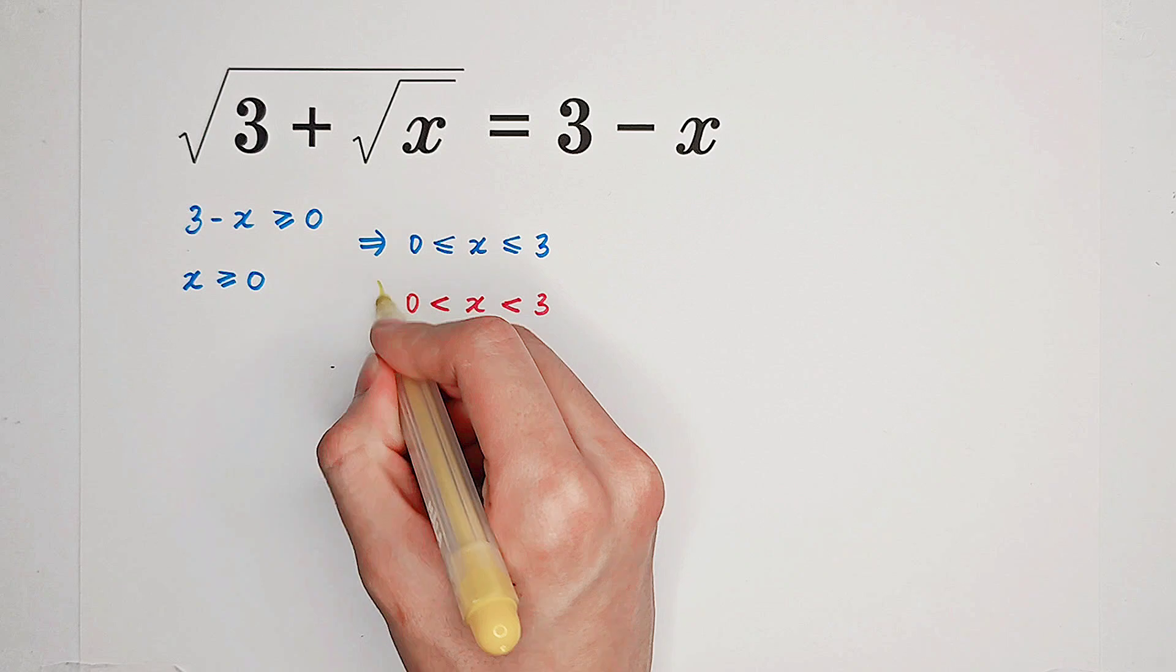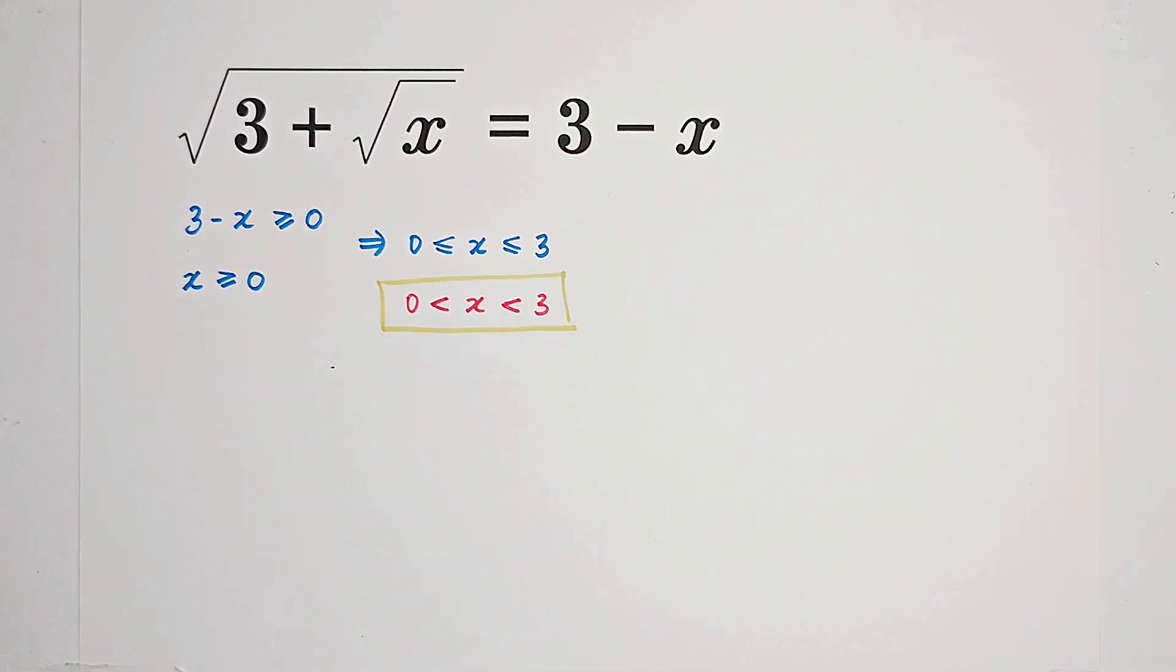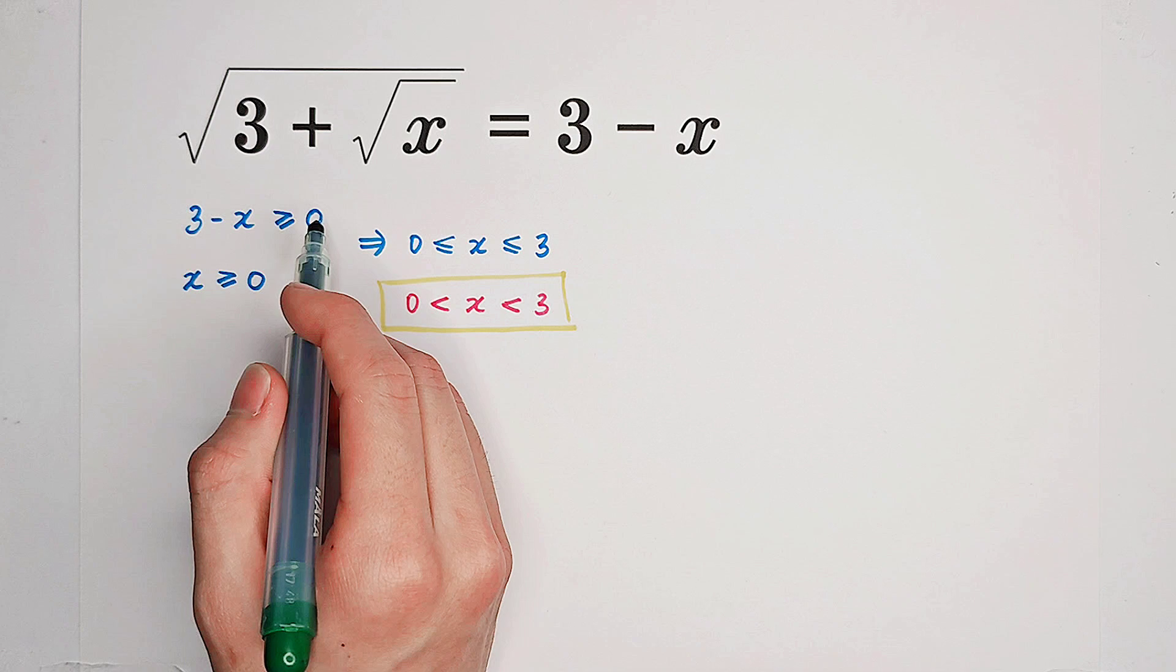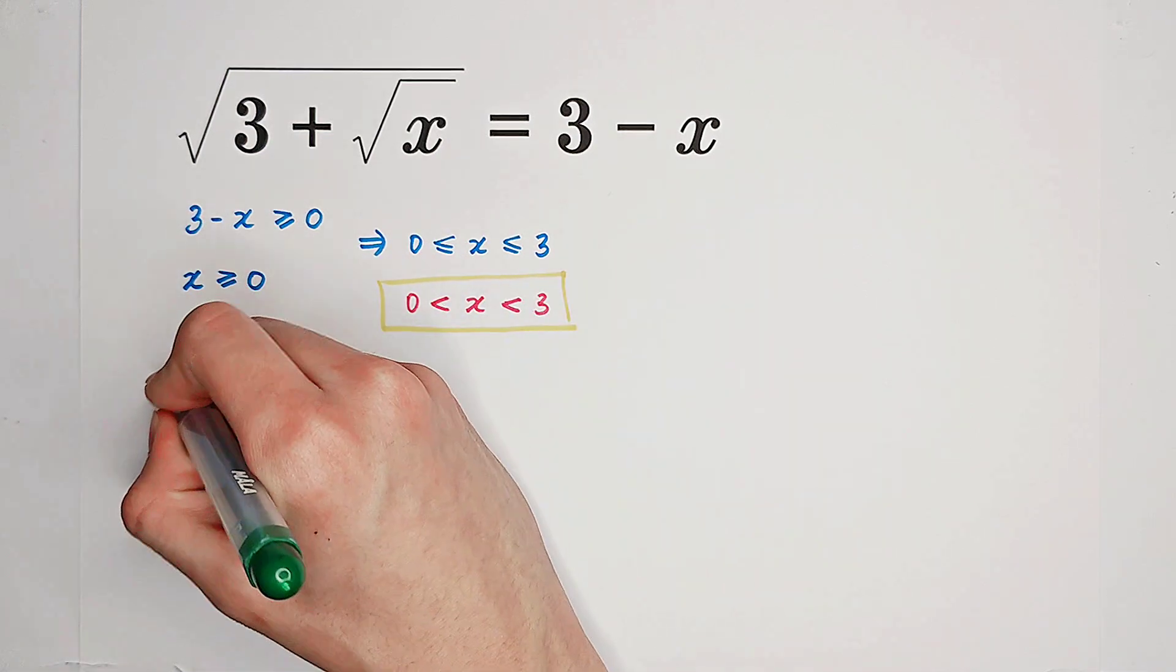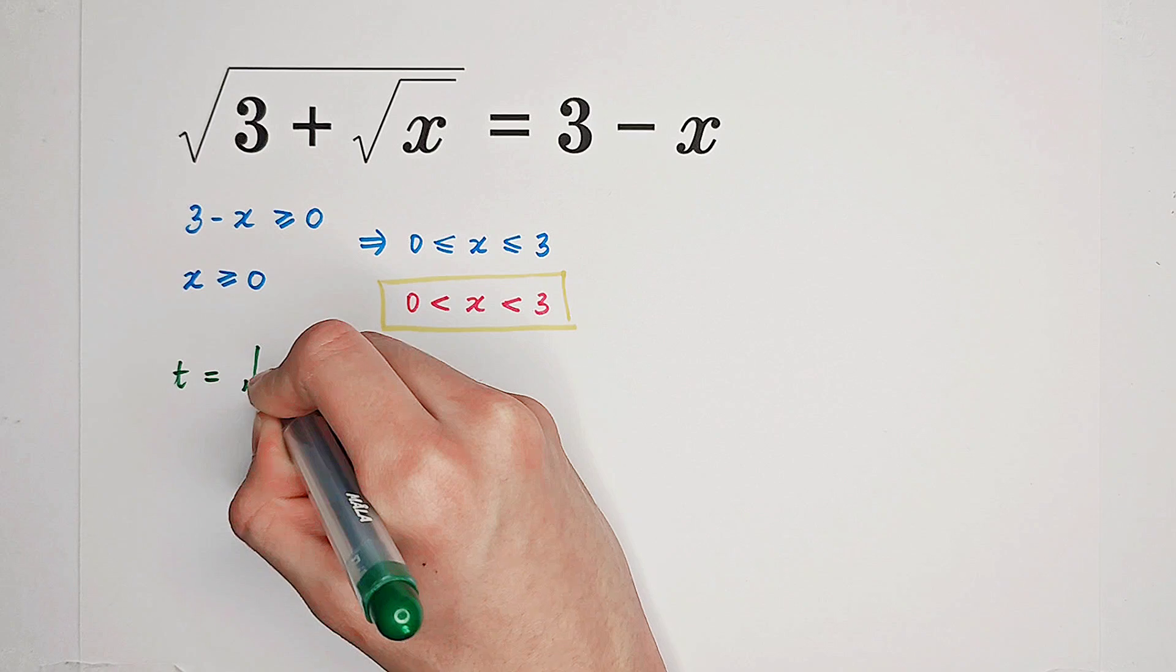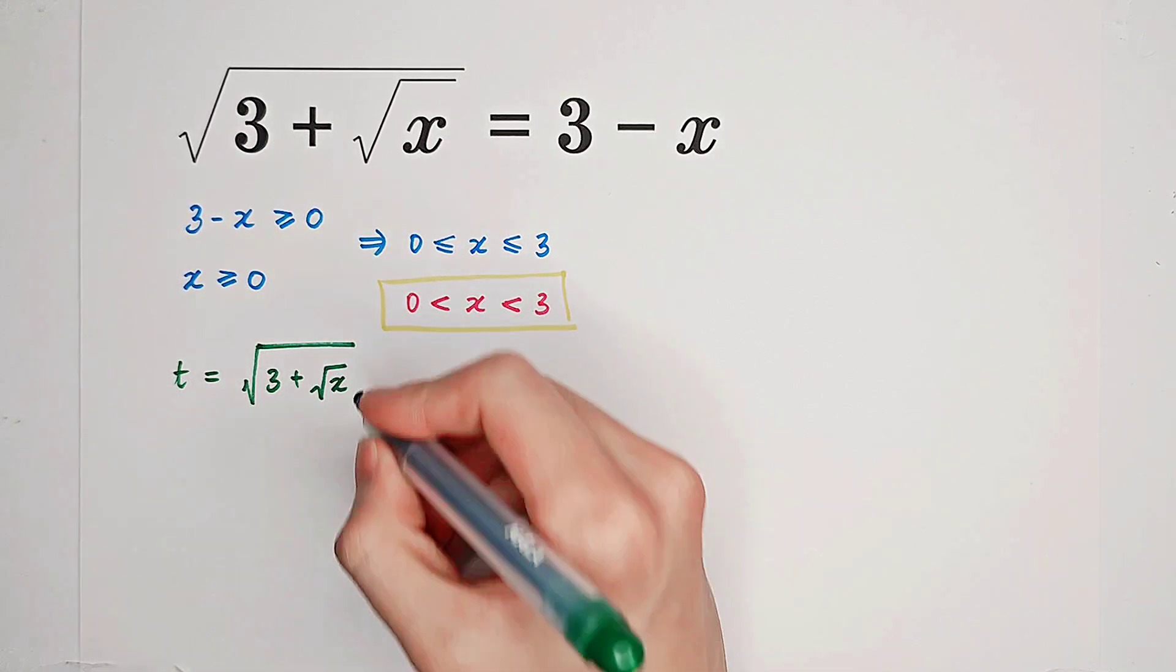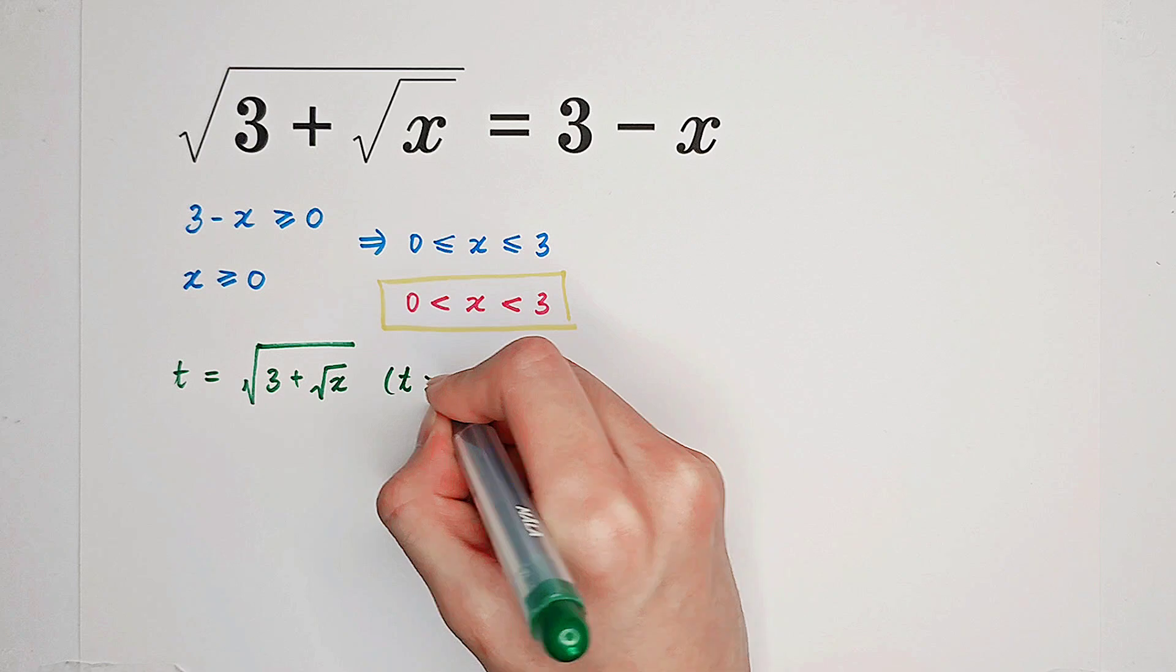Now, we've already talked about the domain of x. What we can do is substitution. It is always good to substitute disgusting things. For example, the left hand side. It contains two square roots. What if I let it be t? t is, of course, greater than 0.